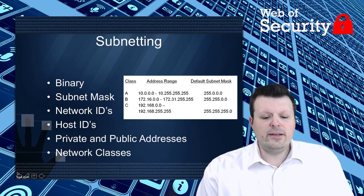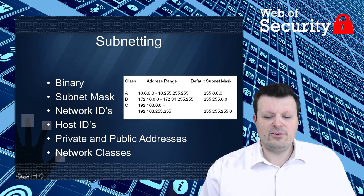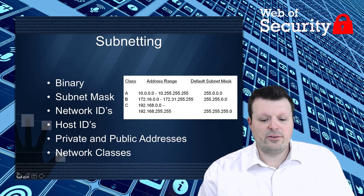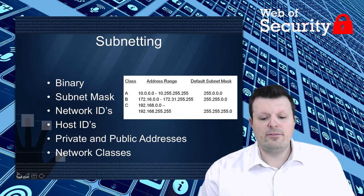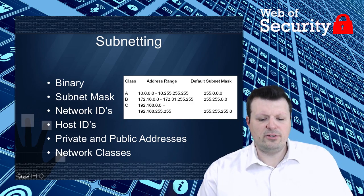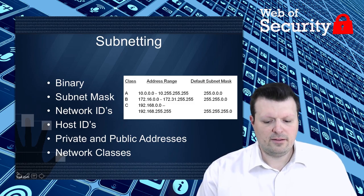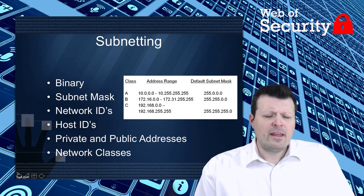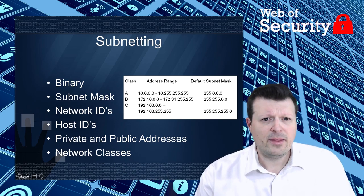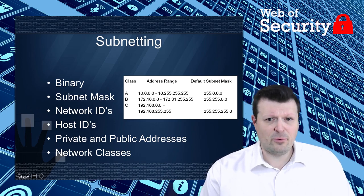There are three different classes of publicly addressable networks: Class A, B, and C. Class A networks run from 10.0.0.0 through 10.255.255.255. Then you have the 172 range for Class B and the 192 range for Class C addresses, with their relative subnet masks shown in the diagram. When counting in binary, the values go 0, 1, 2, 4, 8, 16, 32, 64, and 128 respectively.